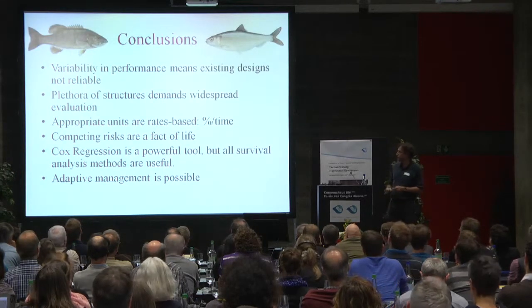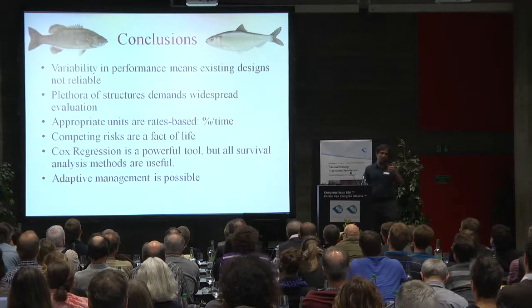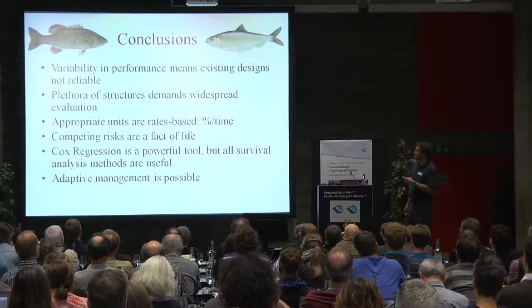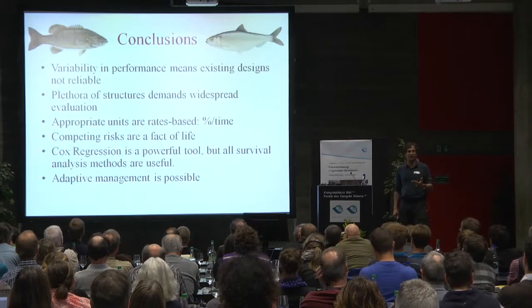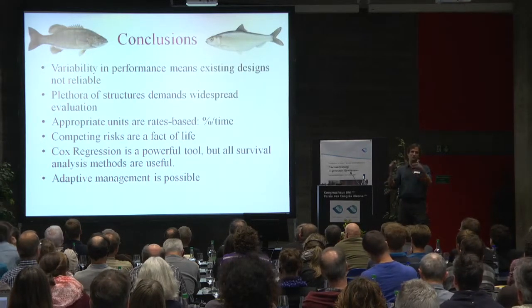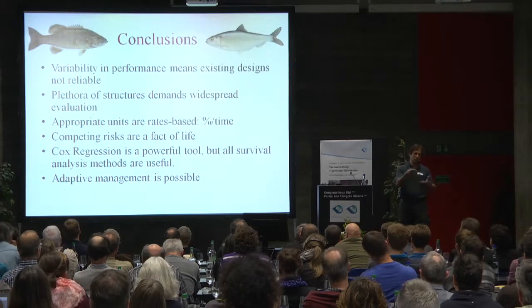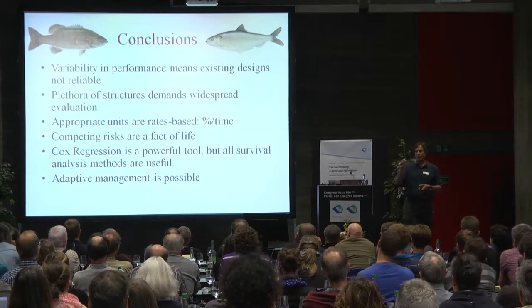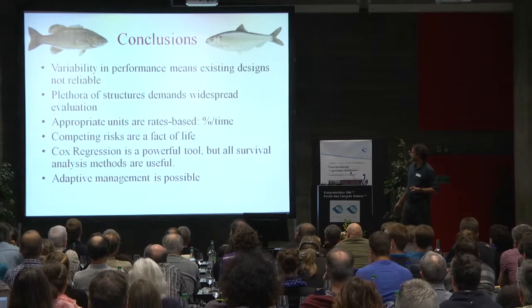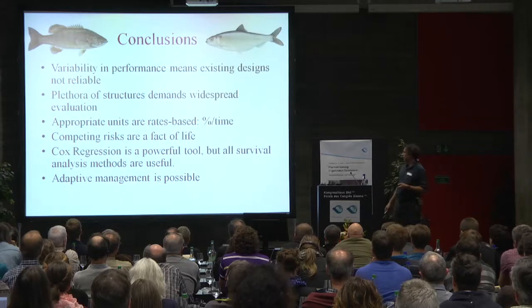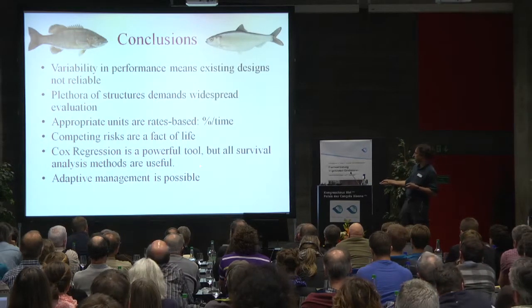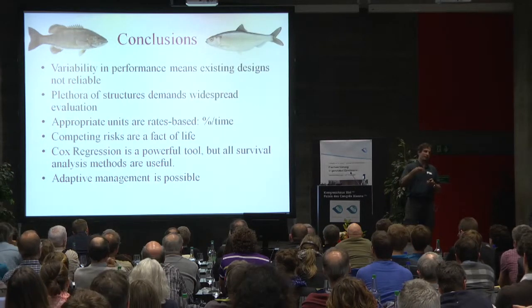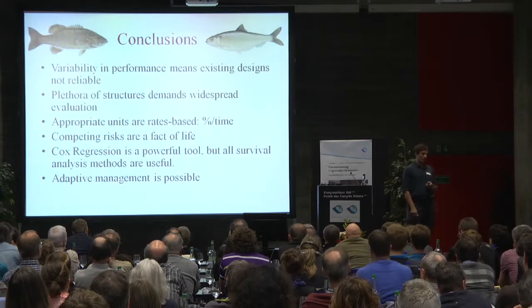To wrap up: we know that there's a lot of variability in fishway performance. The variability is so great that we should not have a great deal of confidence in the existing designs. There's a tremendous number of structures that exist that could be evaluated. If we performed rigorous and consistent evaluations on existing structures, we could perform the necessary analyses to figure out what's working and what's not working, and why. In order to do this, we need to consider rates-based processes, because what we're evaluating are not binary responses — they're rates, and certainly not just counts of fish. They're competing risks — the idea that you can have multiple fates from a given zone. There are several survival analysis tools available, and if we use these methods, we can develop an adaptive management protocol with which we can incrementally modify and improve passage for the fish that we care about.